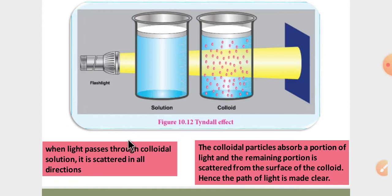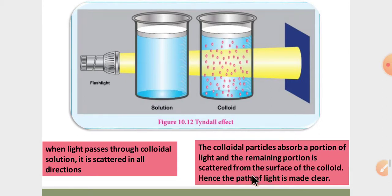If you do an experiment, it is called the Tyndall effect. When you observe the particles, the light will absorb one portion and the remaining portion will scatter. The colloidal particles absorb a portion of the light and the remaining portion is scattered from the colloidal substance. This makes the path of the light clear and visible. This is the Tyndall effect — a very important property of colloids.